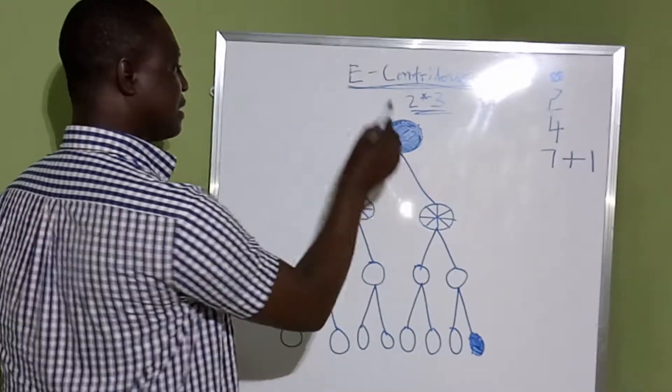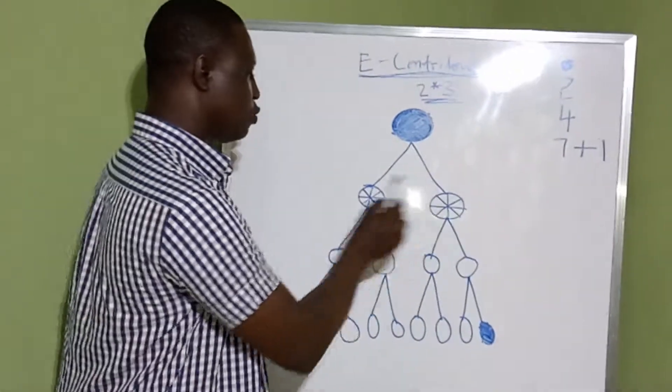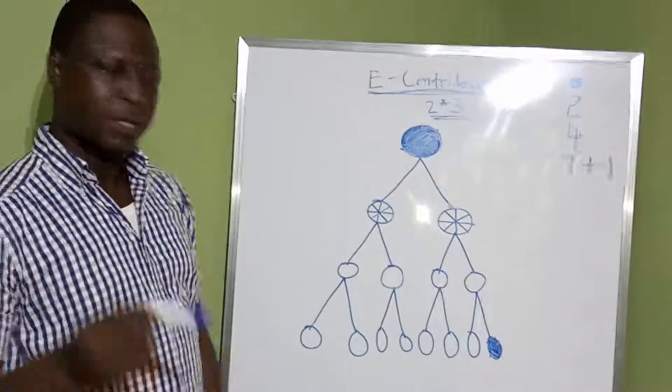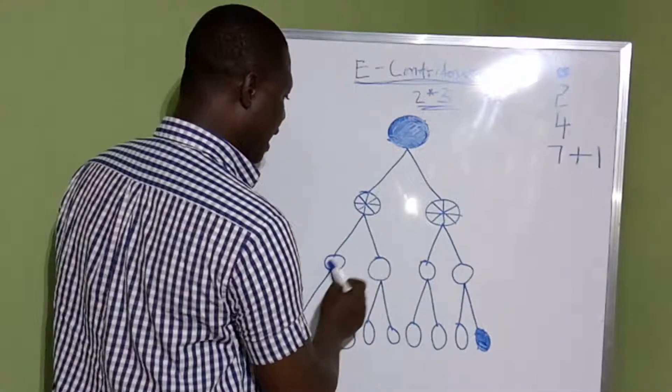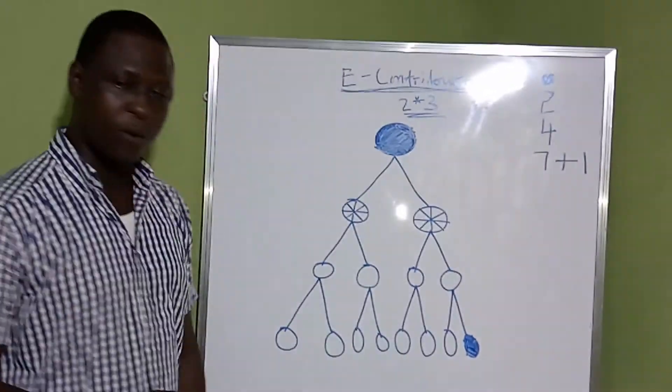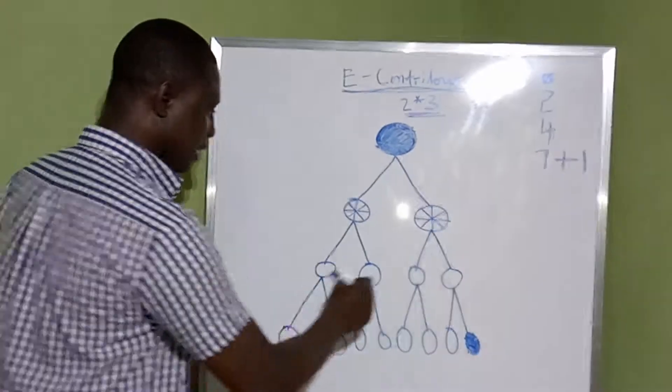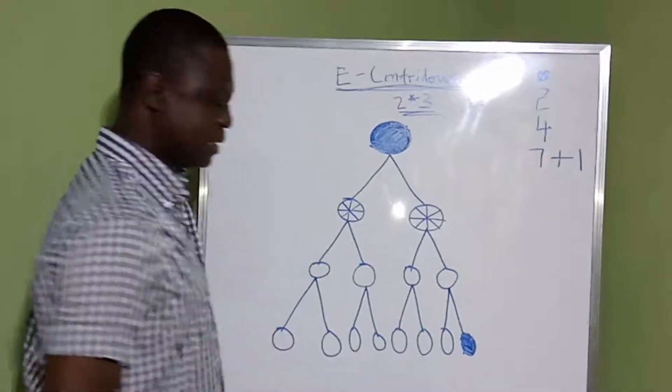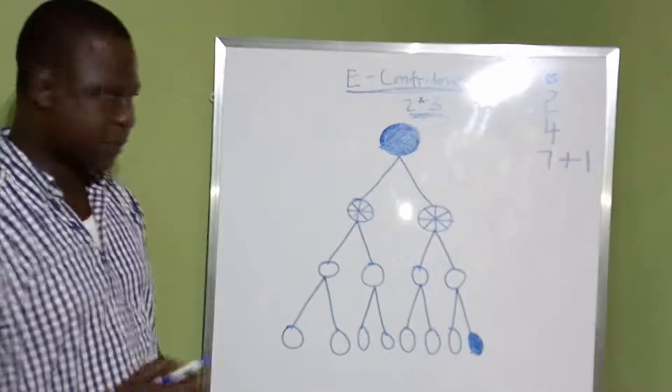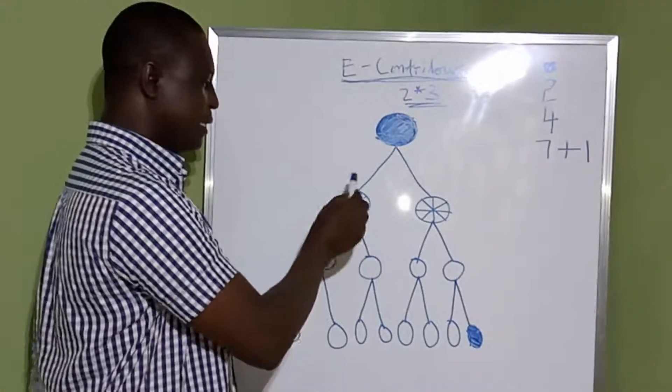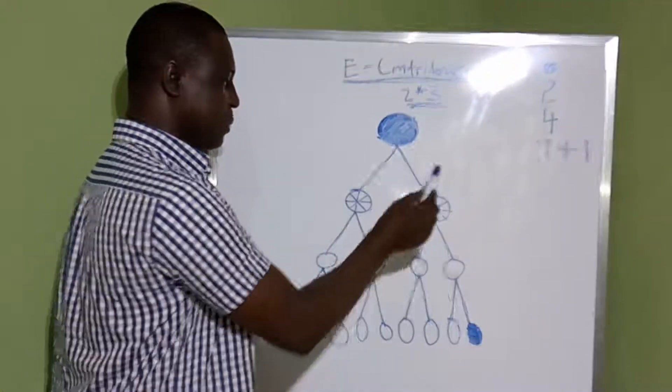Assuming this is you. You have these 2 people under you. Then these 2 are having 2 under them, 4. And these 4 will be having 2 under them. But the way the system works is this: when I bring one, I have it. I bring another person, I have it.